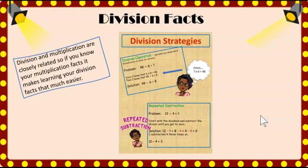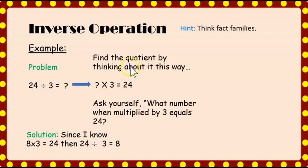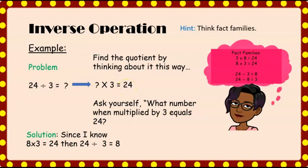Moving right along to our division facts. Division and multiplication are closely related, so if you know your multiplication facts, it makes it that much easier to learn your division facts. To solve division facts, we'll be using inverse operations. To help, we're going to make use of fact families. For example: 24 divided by three. Instead of dividing, we use the inverse and ask ourselves: what number times three equals 24?